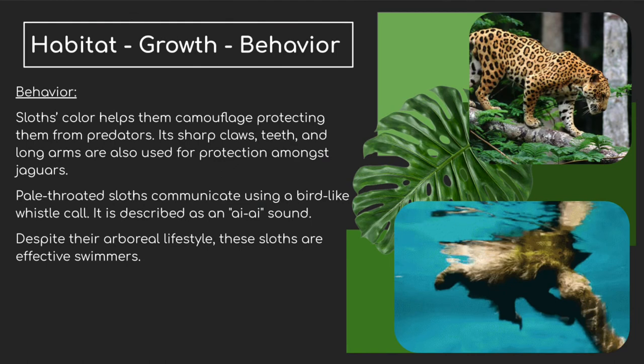The sloth's color helps them camouflage, protecting them from predators. As we can see, they're very green and very brown, so they can hide in the trees a little bit better to protect them from animals that are trying to eat them. One of the biggest threats to them is jaguars, mostly because they can climb trees. The pale-throated sloth also communicates to other sloths using a bird-like whistle call. And despite their lifestyle up in the trees, they're actually really good swimmers.